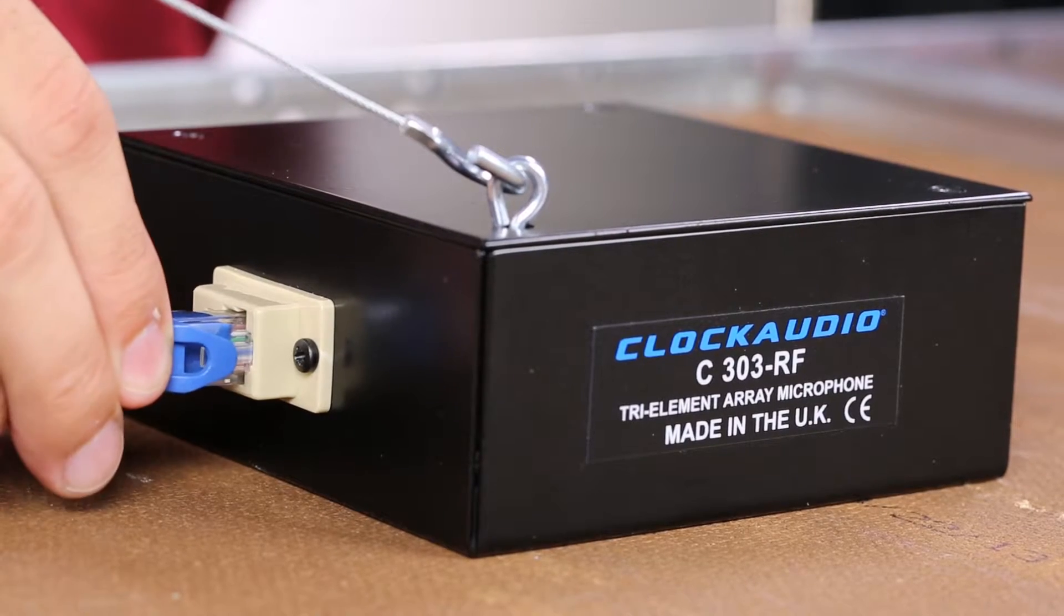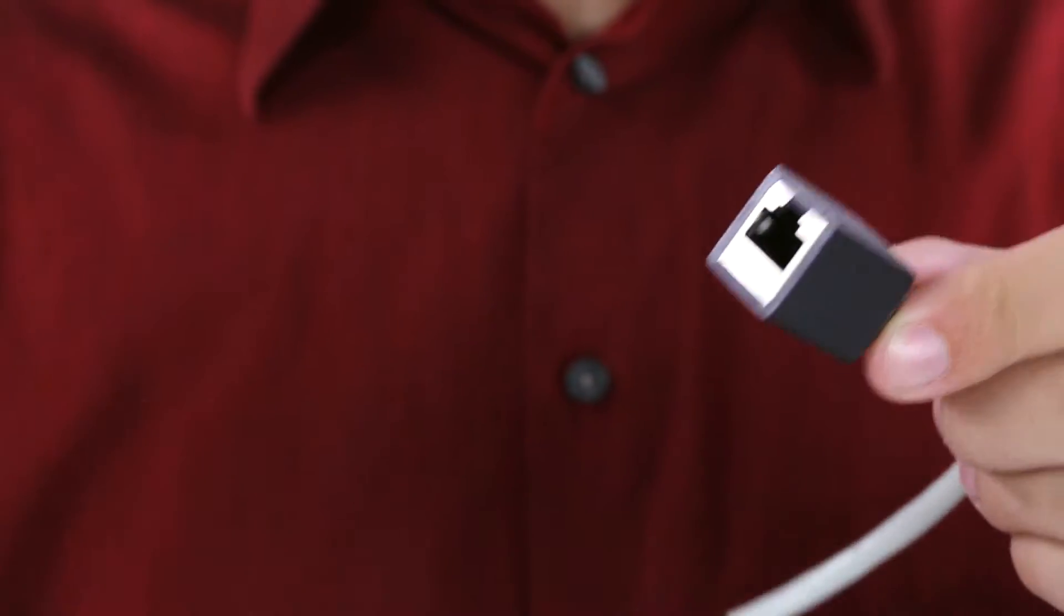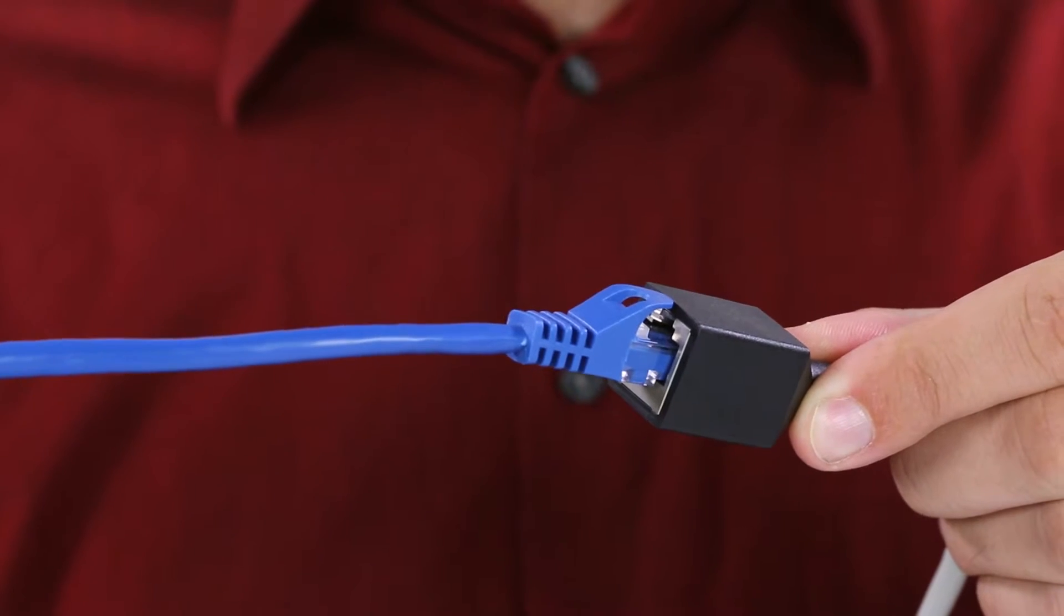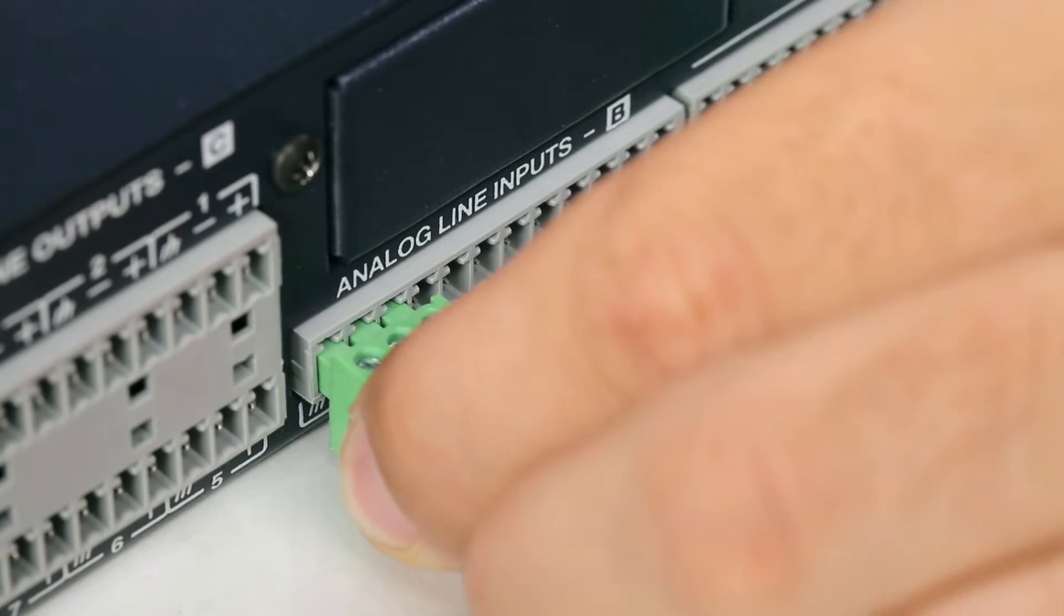Connect a regular CAT5E cable or better to the RJ45 port on the side of the ceiling enclosure. Run the cable to the equipment rack and connect it to the supplied breakout cable. Connect the Phoenix connectors to their respective inputs.